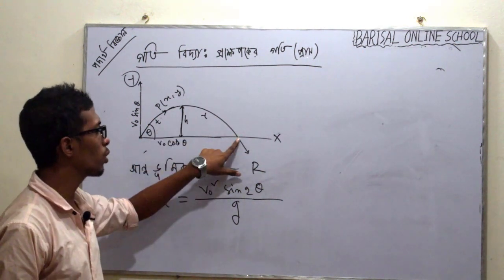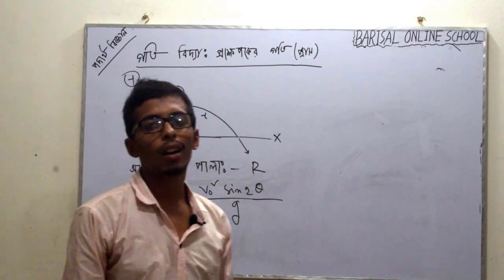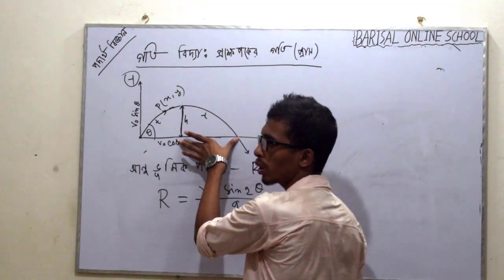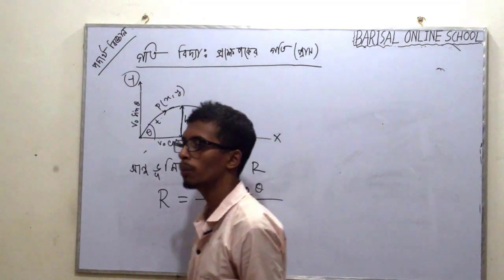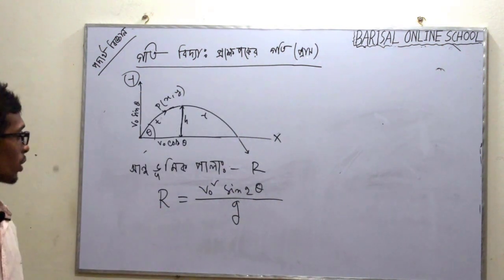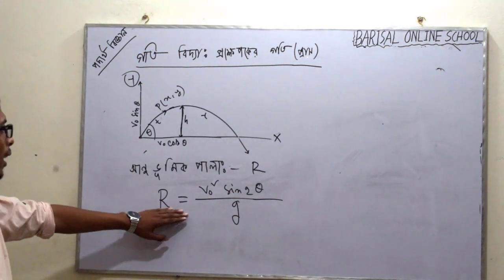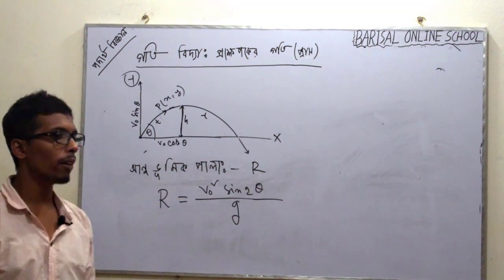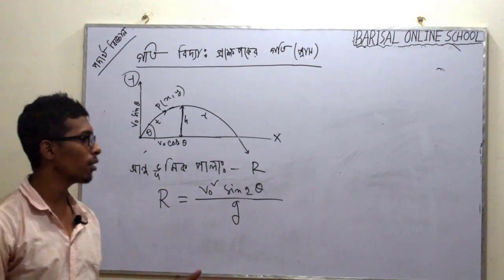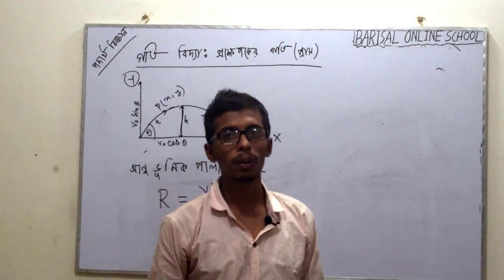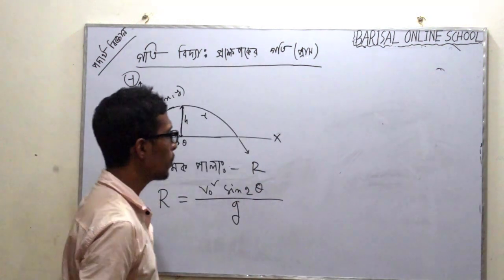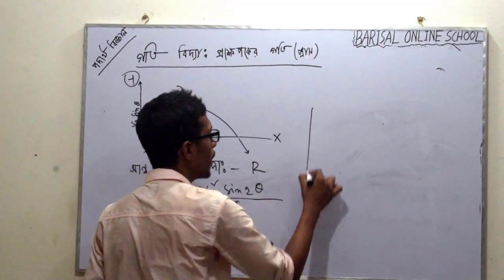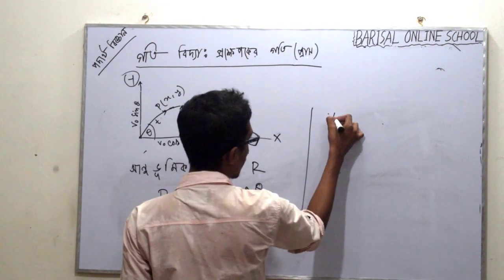This shows the horizontal range equation. The range R equals v² sin2θ divided by g. So the maximum horizontal range is obtained when this equation is applied. The condition for maximum range: when is the range maximum? That is shown by this equation.